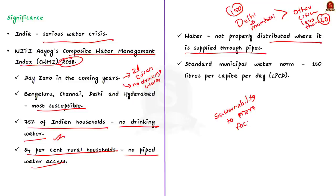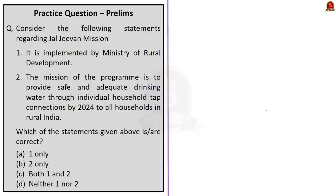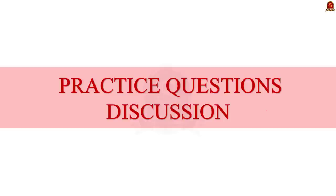Mega cities like Delhi and Mumbai get more than the standard municipal water norms of 150 liters per capita per day, while other cities get less than 40 to 50 liters. In the present scenario, the Jal Jeevan Mission's implementation is highly important, and the component dealing with ensuring sustainability should be given more focus to ensure no major water crisis in India in the near future due to climate change.